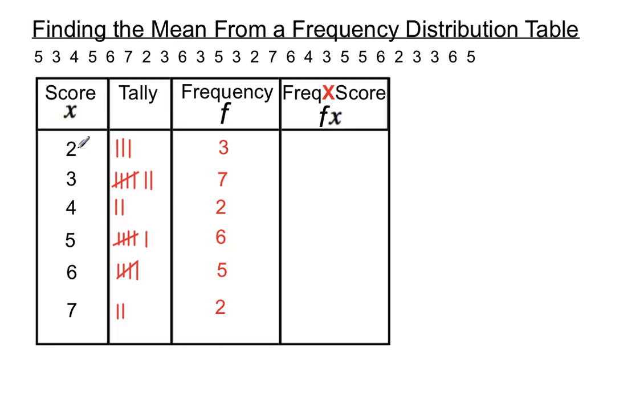Because if you've got 3 scores of 2, then that's adding 6 to the total. And 3 scores of 7 is adding 21 to the total, etc.